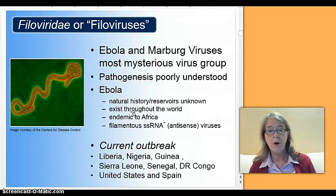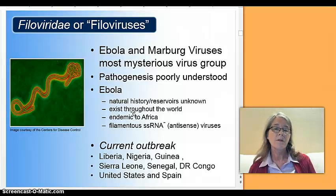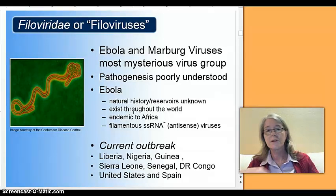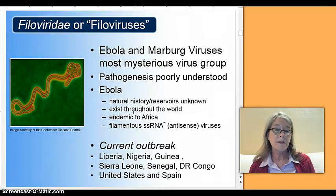The Ebola and Marburg viruses are a mysterious viral group because they cause the death of the host so quickly that very often the disease is self-limiting, affecting very small communities, and it doesn't spread beyond smaller regional areas. The way this disease works is not well understood.